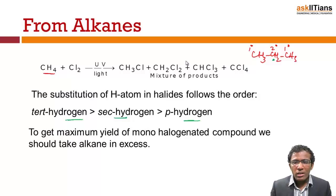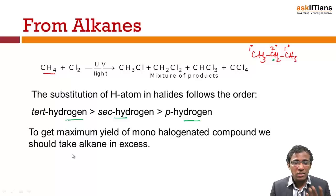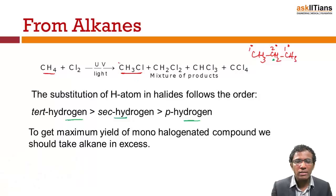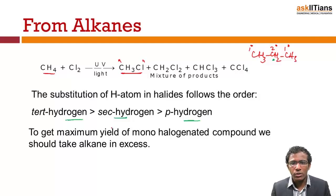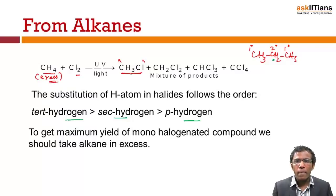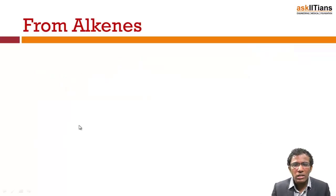If I want to get only methyl chloride as the predominant product without a mixture, I should take methane in excess instead of chlorine. If methane is in excess, chlorine is not available in sufficient quantity to produce the di-, tri-, or tetra-substituted products, so we majorly get the monohalide. So this is the preparation from alkanes. Now let's see how we can prepare alkyl halides from alkenes.